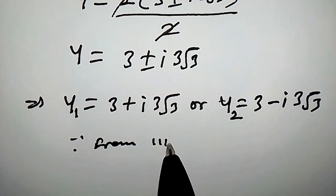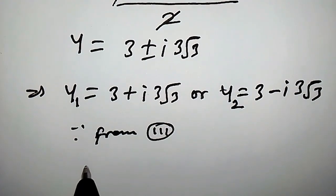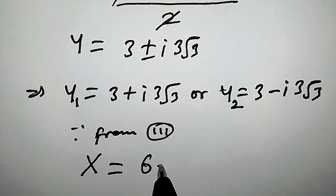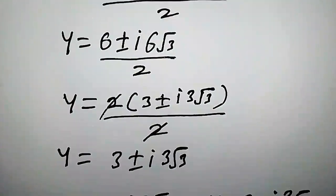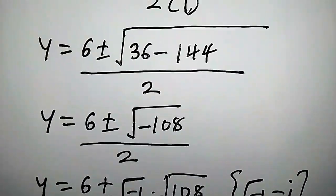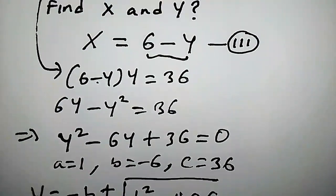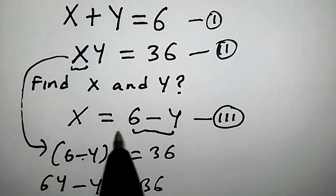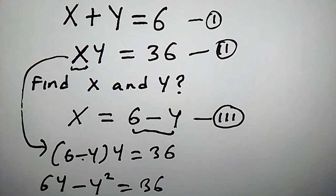Now, from equation 3, x is equal to 6 minus y. We will use this to find the corresponding x values for each value of y.